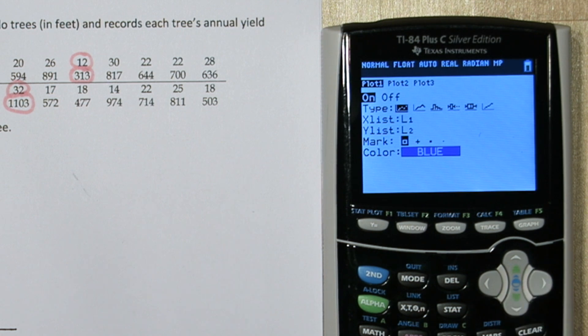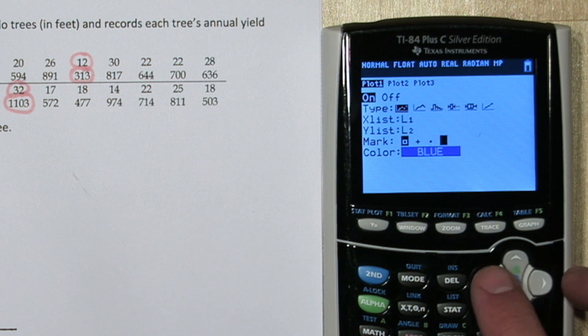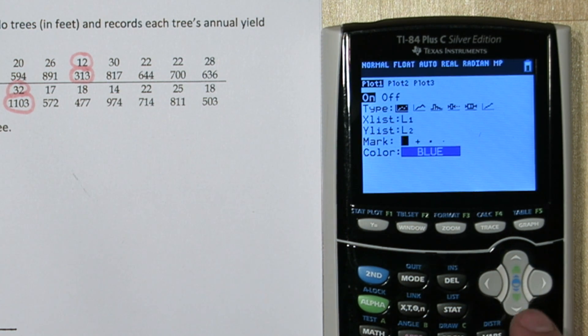That's what we want. The xlist is our explanatory variable, and we input those into list 1, so we're good. Same with our ylist, our response variable is in list 2. And you can choose what sort of mark you want to use, I'm just going to leave it at its default.